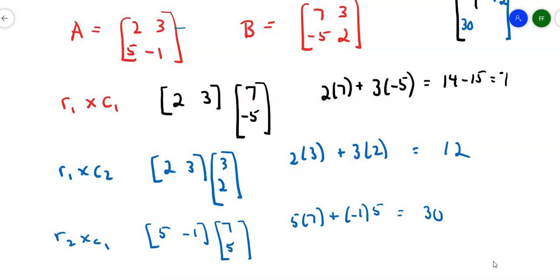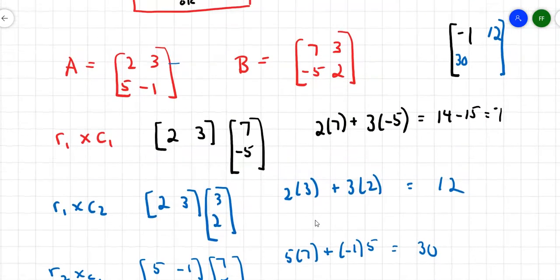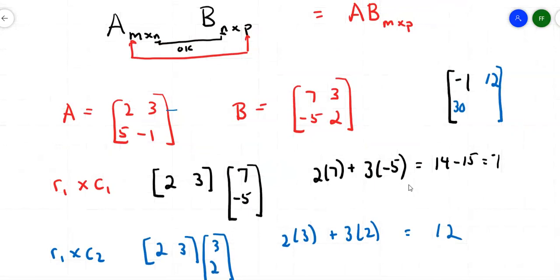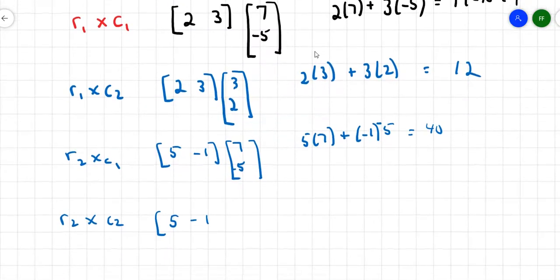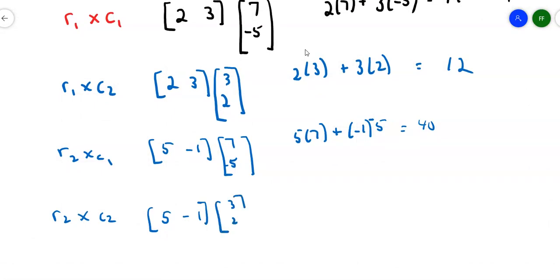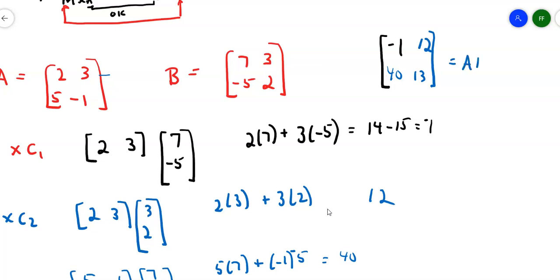Row 2 by column 2: row 2 is 5, -1 and column 2 is 3, 2. So 5×3 plus (-1)×2 is 15 minus 2, which is 13. That 13 goes in the bottom right corner. So the product AB is the 2 by 2 matrix [-1, 12; 40, 13]. I was multiplying a 2 by 2 and a 2 by 2, and I got a 2 by 2 for an answer.